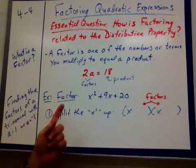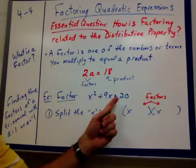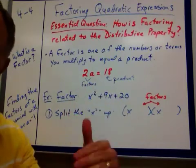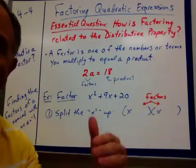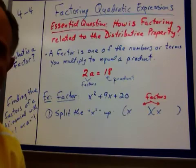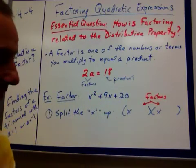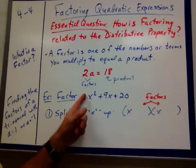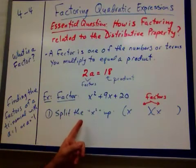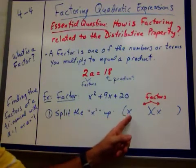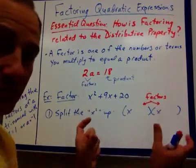So how do we do that? Well, to factor x squared plus 9x plus 20, I'm going to go through a couple of steps here. When a is 1, the first thing we want to do is split the x squared up. So we're going to get x and x.